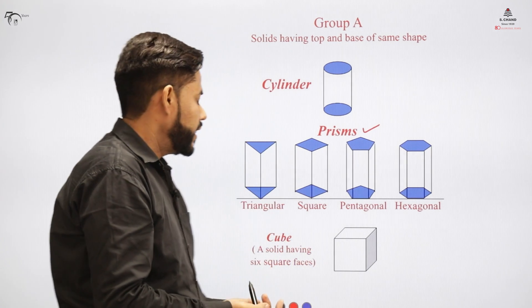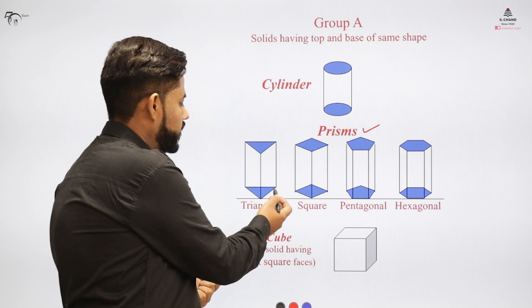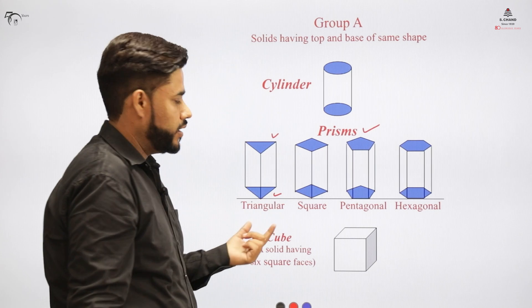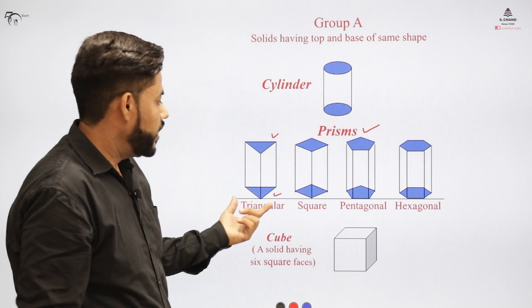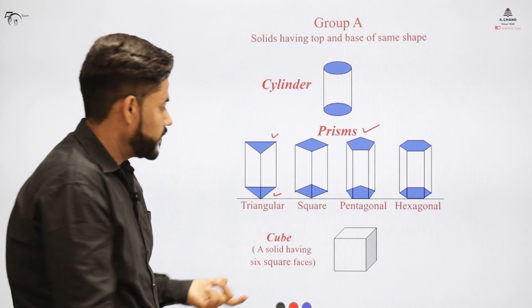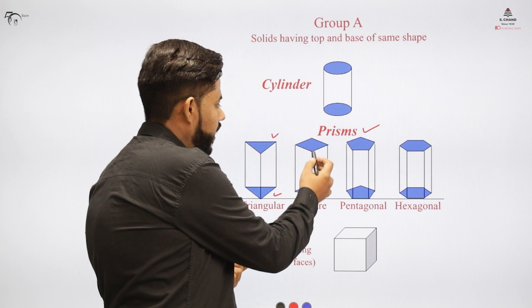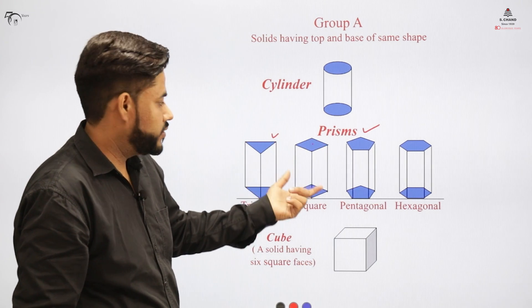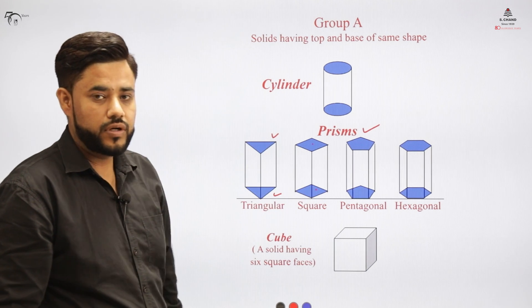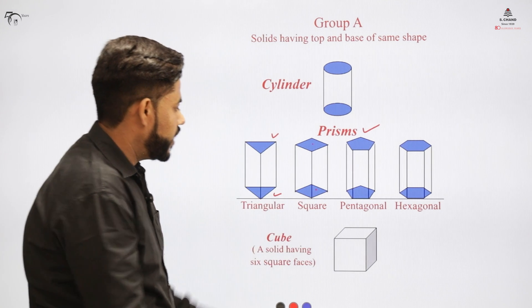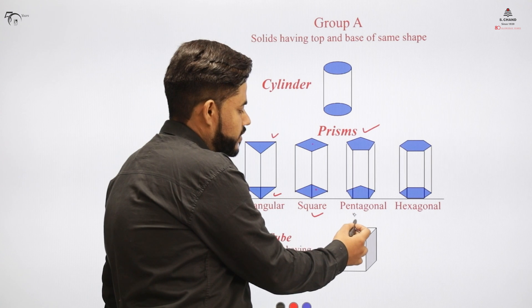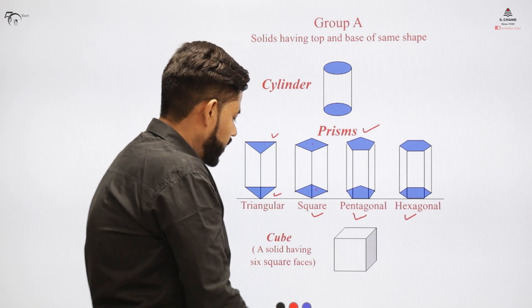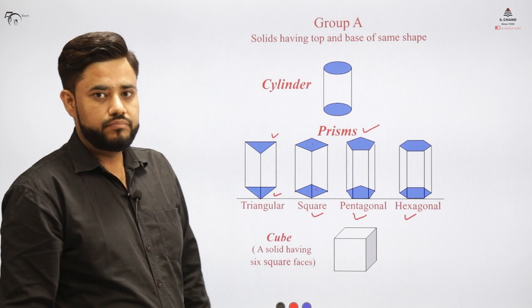For example, if the base is a triangle and the top is also a triangle, joining both gives a triangular prism. Similarly, if the base and top are both squares, joining them gives a square prism. If the shape is a pentagon, we get a pentagonal prism, or a hexagonal prism for a hexagon. A cube is also an example of a prism.